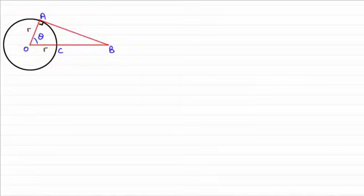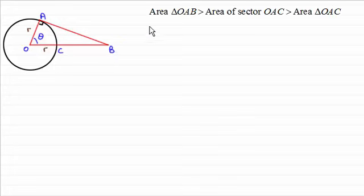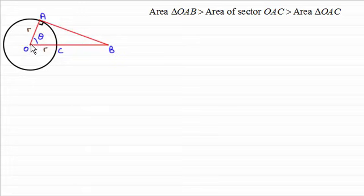One way we can work out these approximations is by taking a circle of radius R, centre O. If I let the angle between OA and OC be theta radians, then by drawing the tangent at A and seeing where it intersects the line OC produced, say at B, we get a right angle triangle OAB. Now by considering various areas, I can form this inequality here.